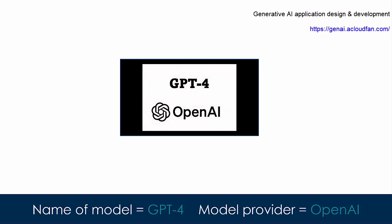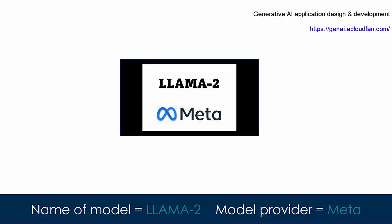For example, GPT-4 is the name of the model that powers ChatGPT. This model was created by OpenAI. Here's another example. Lama family of models were created by Meta. Now I just gave two examples, but there are many more models and the number of models is growing rapidly.